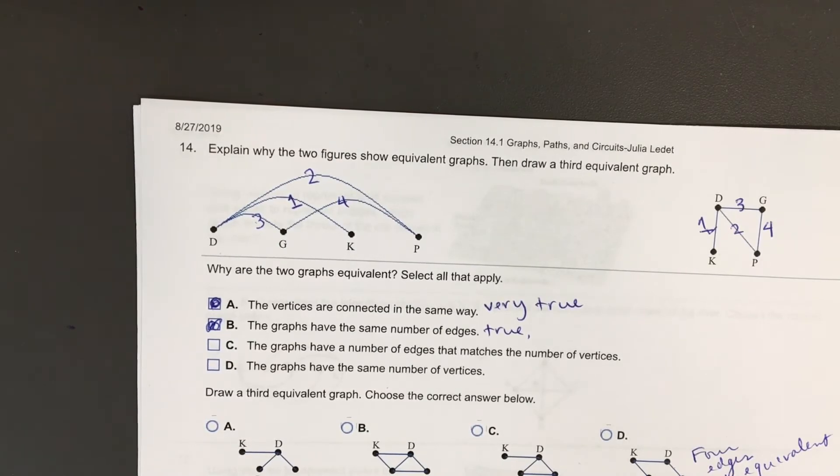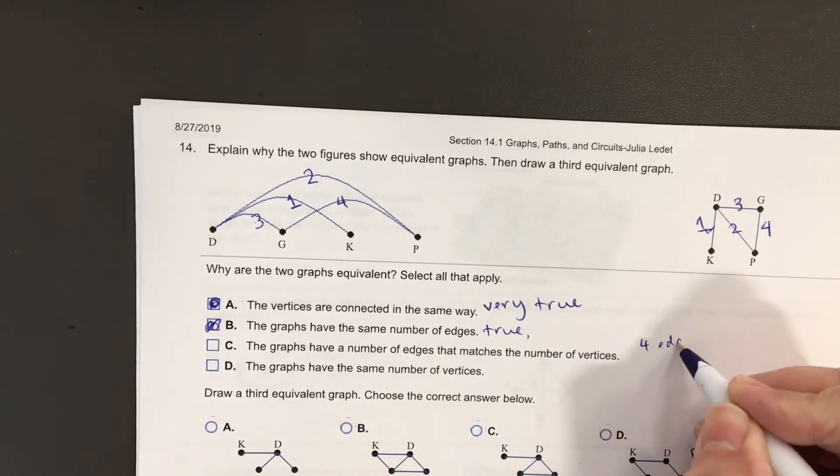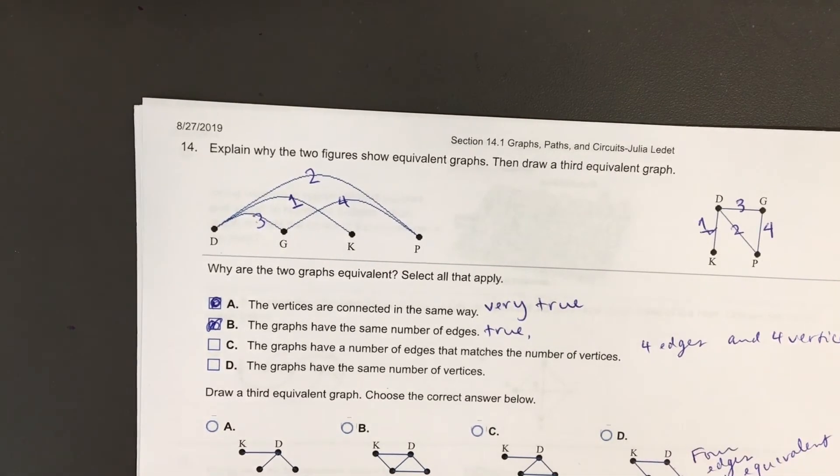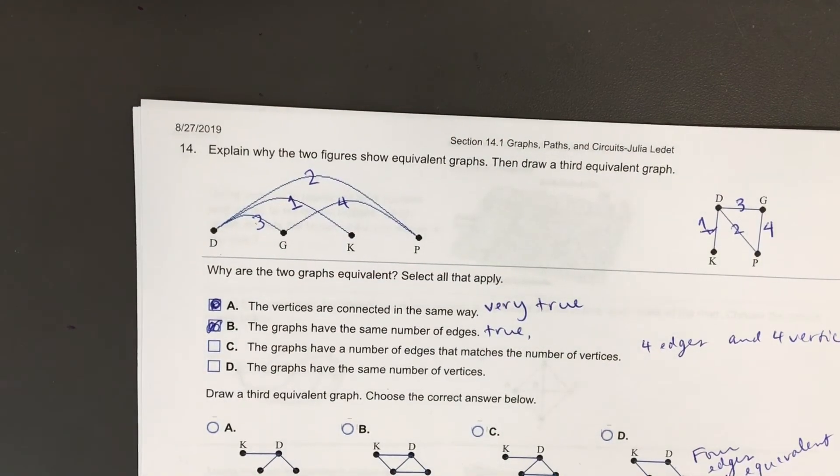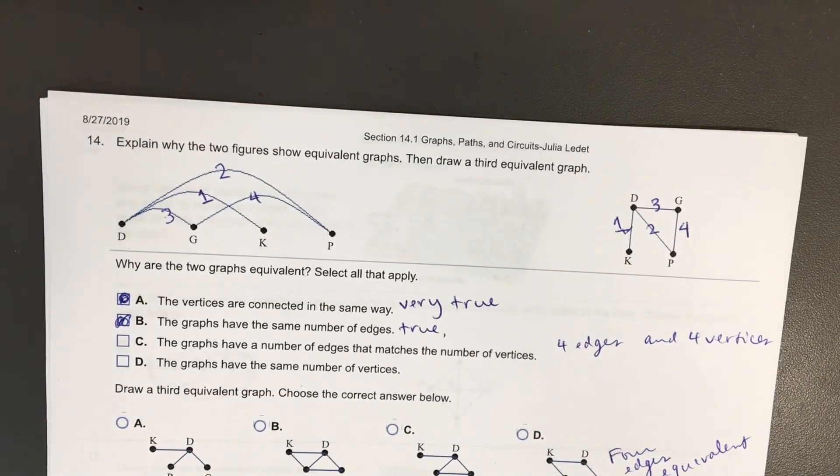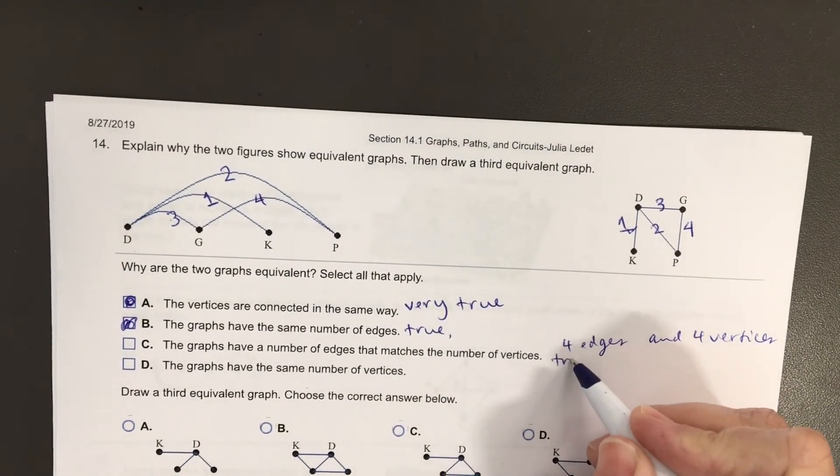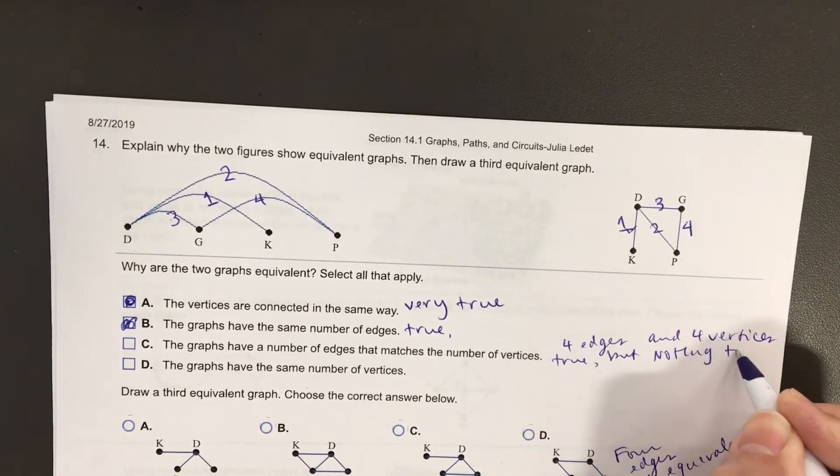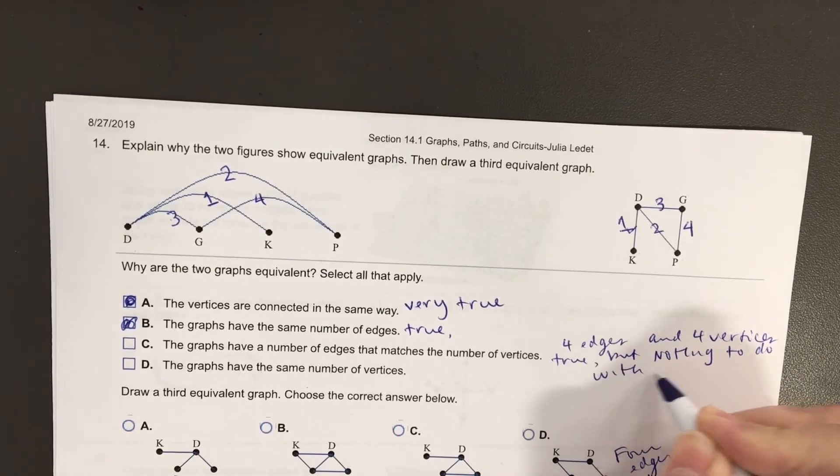Part C, the graphs have a number of edges that matches the number of vertices. That's true. Each graph has four edges and four vertices. Don't select that. We don't want that one. Nor does the computer expect you to select that one. It's a true statement, but that has nothing to do with equivalent graphs. True, but nothing to do with the question.